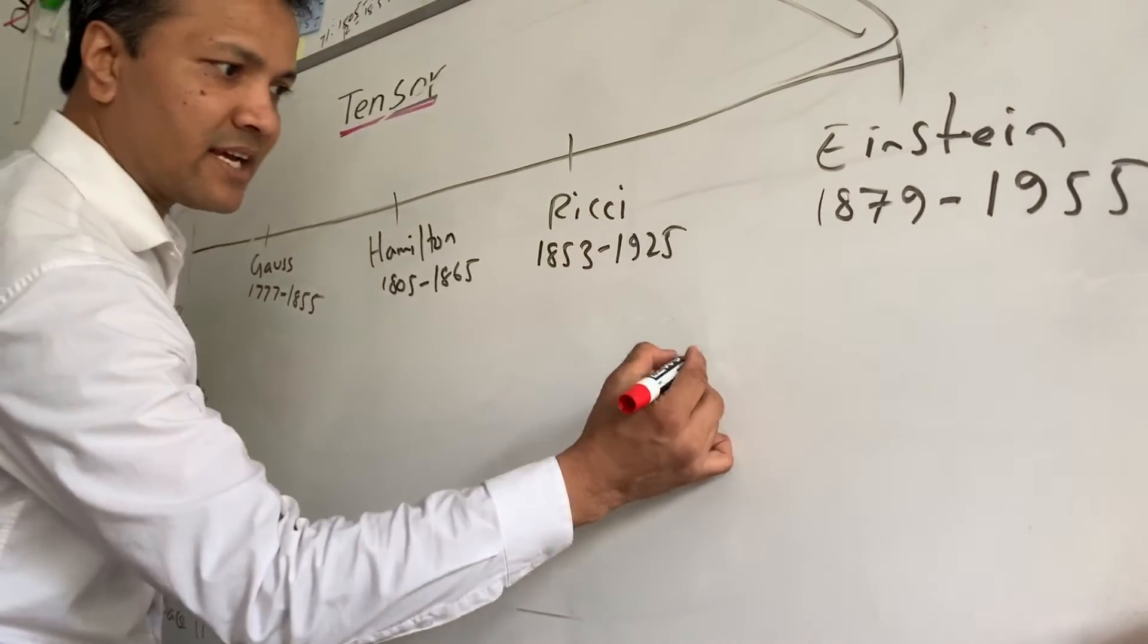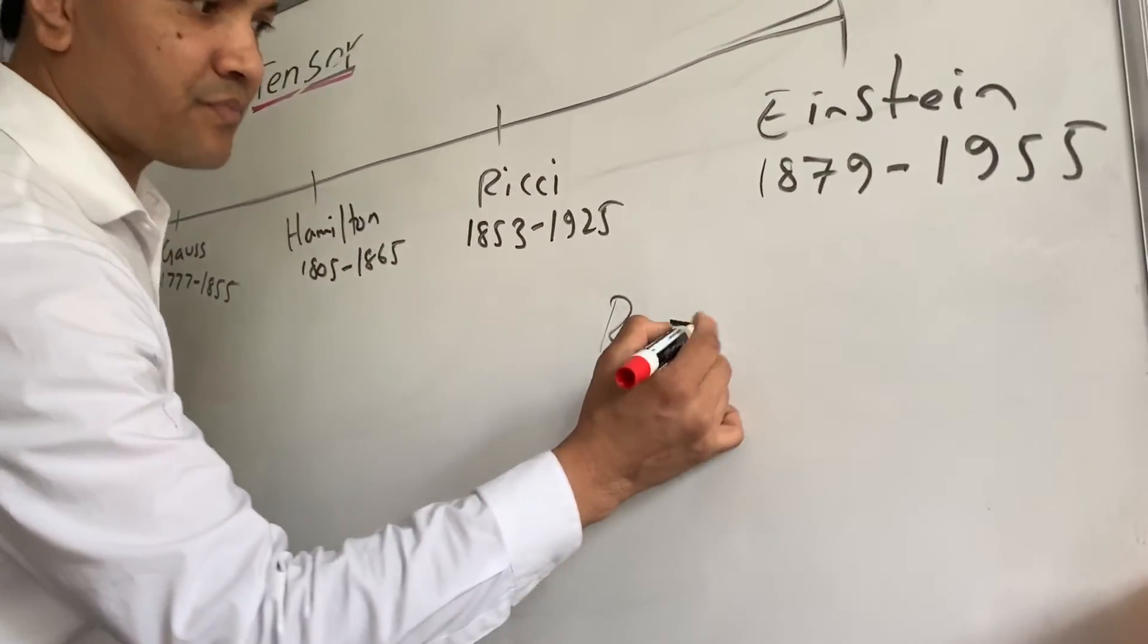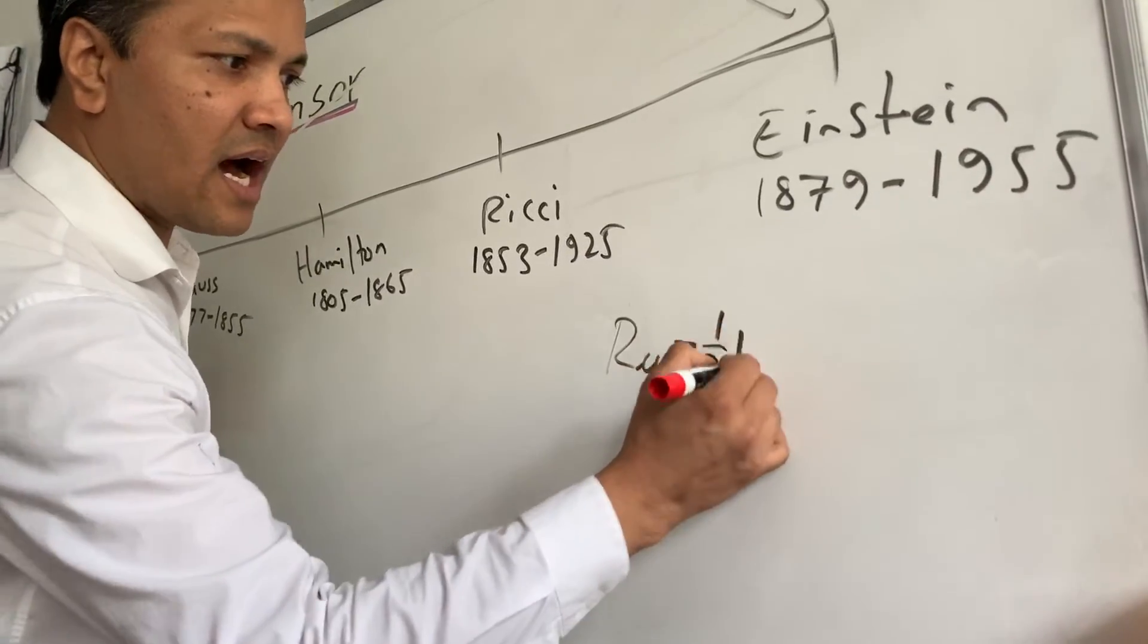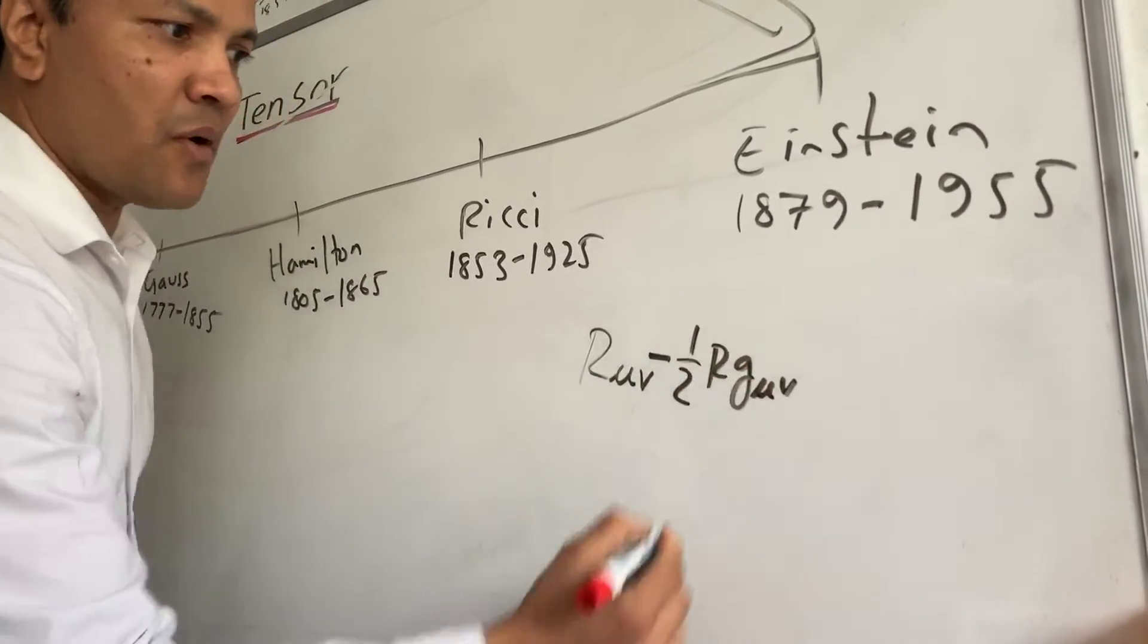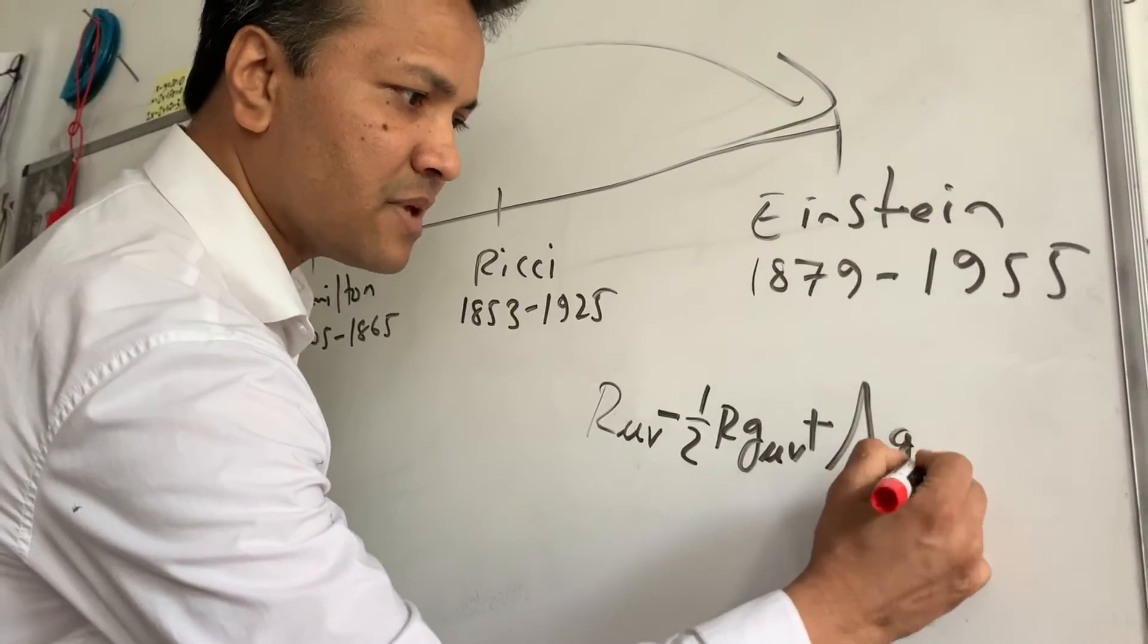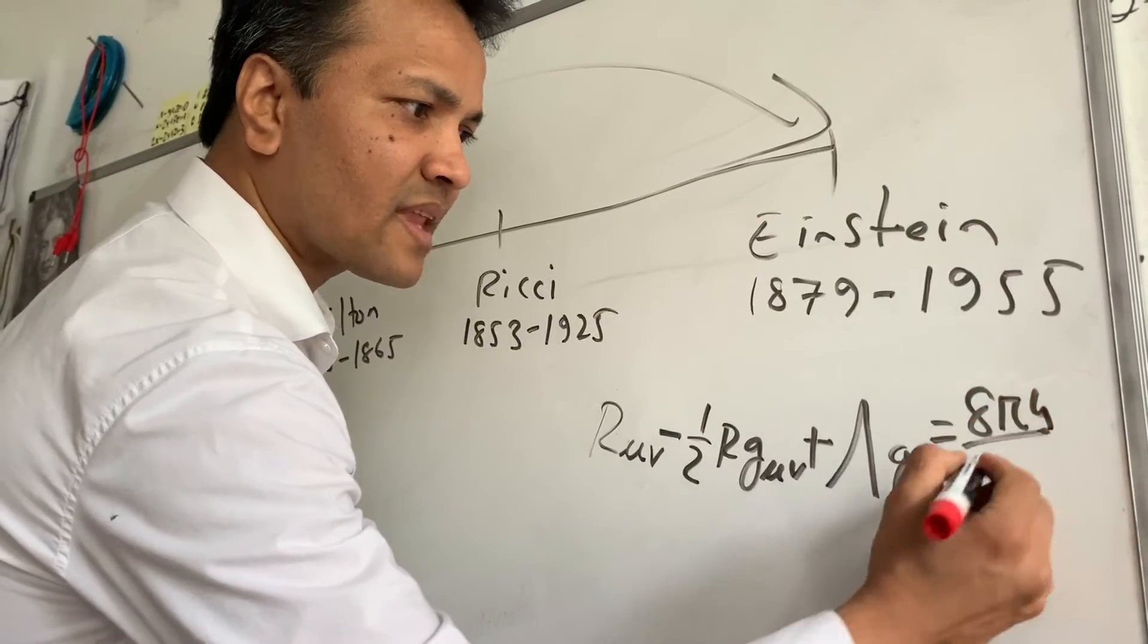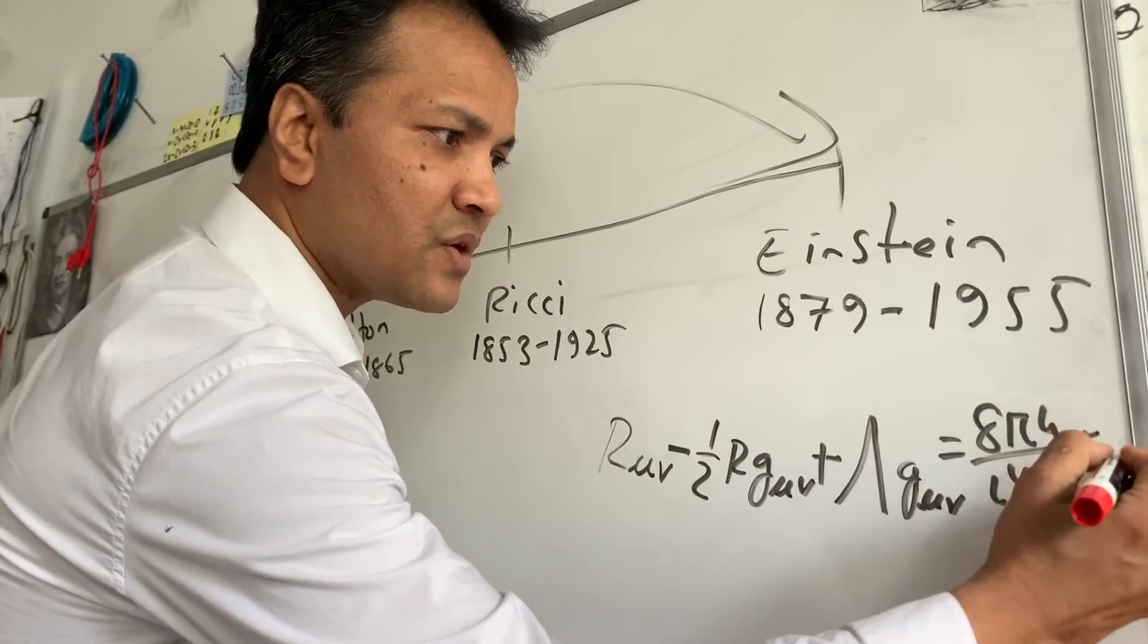He told us this theory by writing this: R_μν - ½R g_μν + λg_μν = 8πG/c⁴ T_μν.